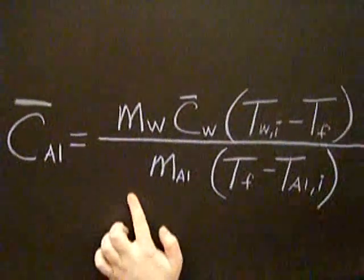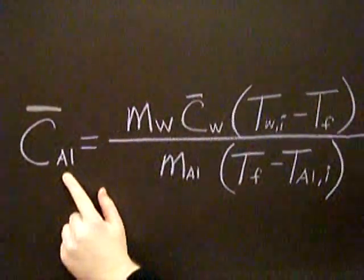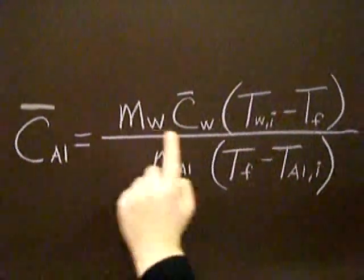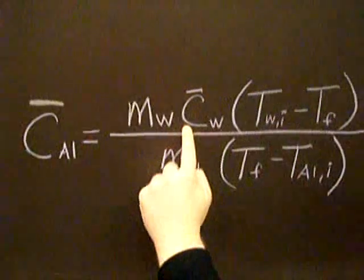Alright, so let's see here. So the average specific heat of aluminum. Okay, so the mass of the water, we can find that, no problem. The average specific heat of water, we'll be given that.